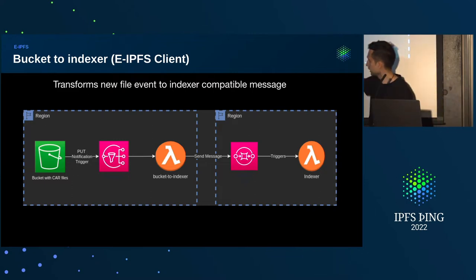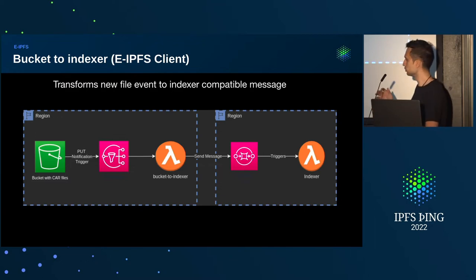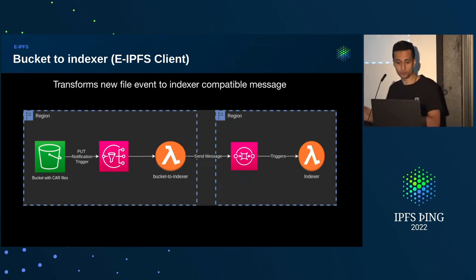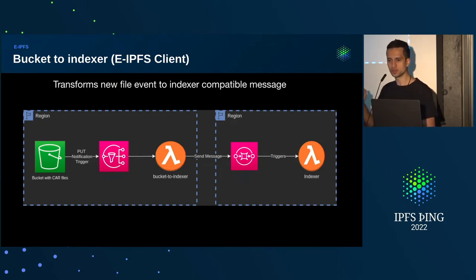On that side we have just one single bucket, but the whole Elastic IPFS thing is agnostic from the location where the file actually is. We don't store the car file, we don't store the blocks — we only store positions and coordinates of where things are. We could have multiple other buckets sending to the same SNS topic, or other regions with that same client. However, once we index the files, you cannot delete or move them anymore, otherwise we lose the link of where stuff really is.